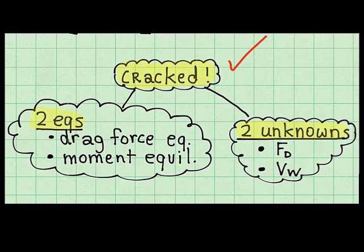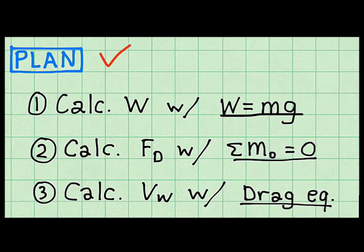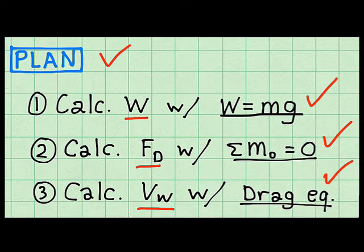The reason I know is I have two equations: the drag force equation and moment equilibrium around point O. And I have two unknowns to solve for: the drag force and the speed of the wind. My plan is to calculate weight with this equation, calculate the drag force with moment equilibrium, and calculate the wind speed with the drag equation itself.